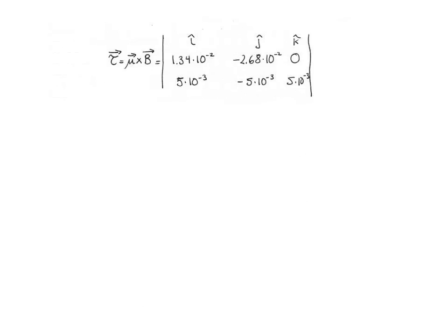To calculate the torque, we find the determinant of a matrix with unit vectors i, j, k on the first row; the magnetic moment components — 1.34 times 10 to the negative 2, negative 2.68 times 10 to the negative 2, and zero — on the second row; and the magnetic field components — 5 mT in x, negative 5 mT in y, and 5 mT in z — on the third row.